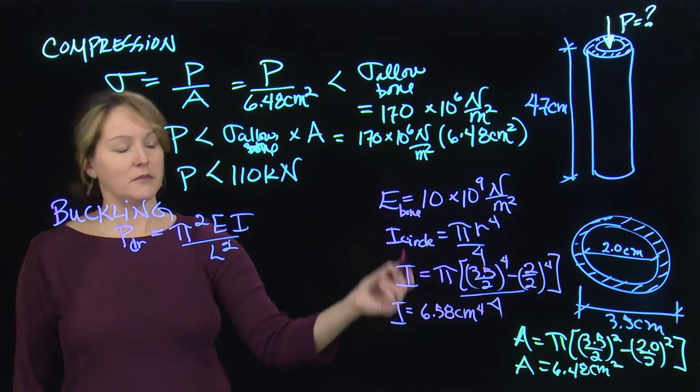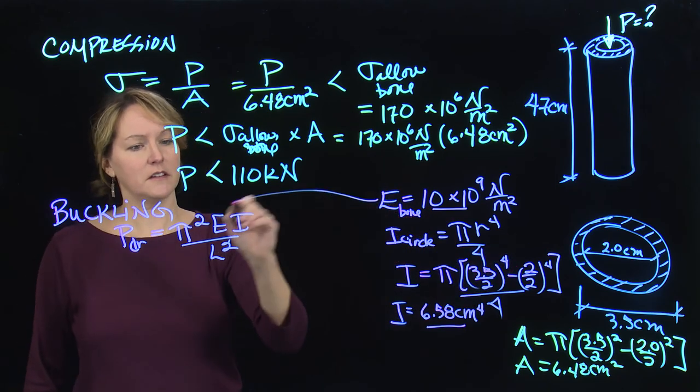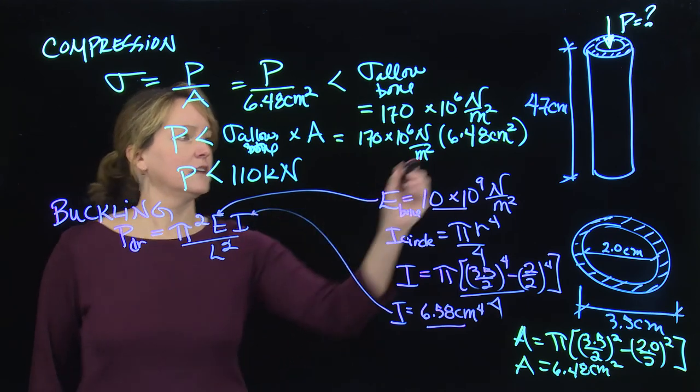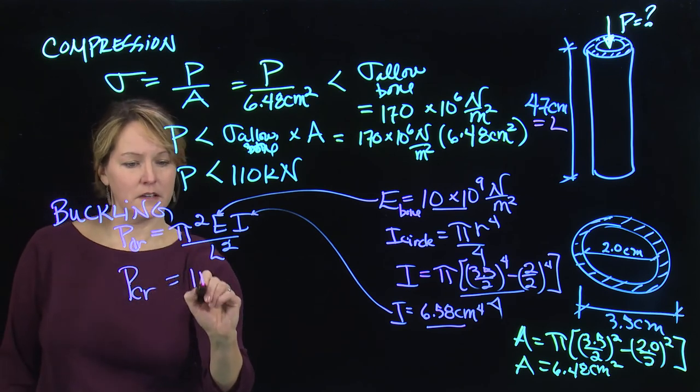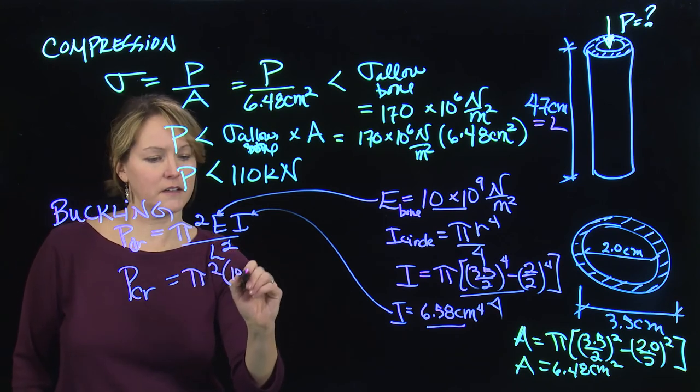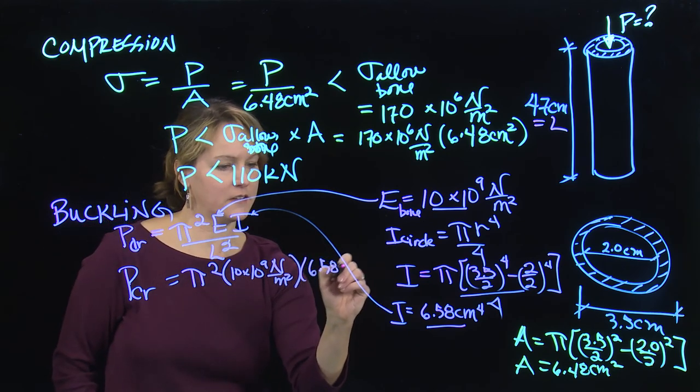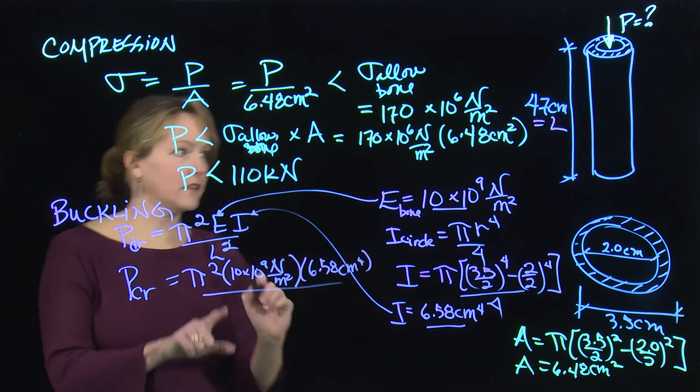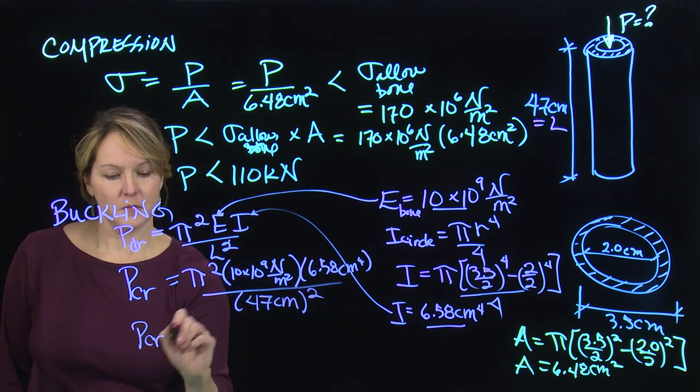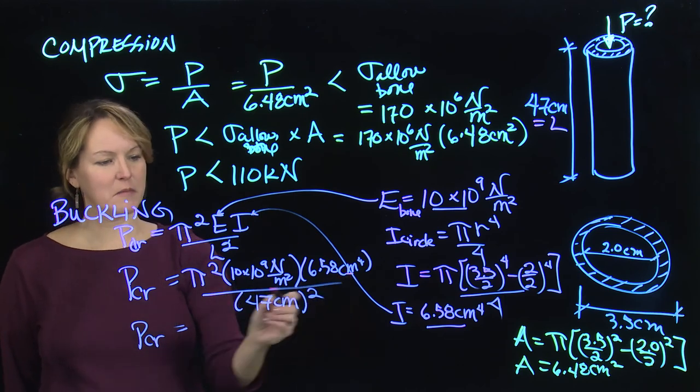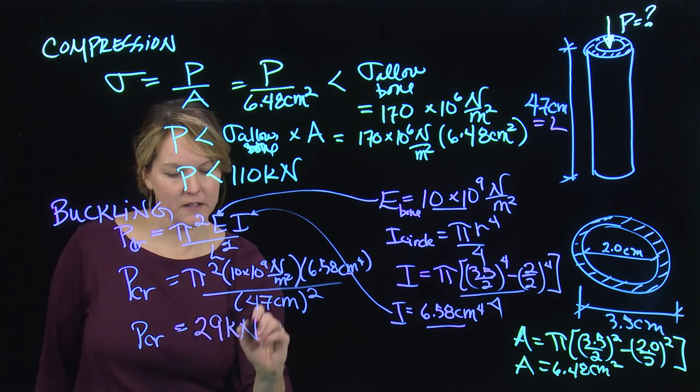That's just, again, a material property. It's not a material property. It's property of the cross section. And the E is a material property. But I can put those all together. The E goes in here, moment of inertia. And my L is this 47 centimeters. So I should be able to calculate my critical buckling load as pi squared times E, 10 times 10 to the 9th newtons per meter squared. Moment of inertia was 6.58 centimeters to the fourth. And I divide by the length, which is 47 centimeters. And that gets squared. Putting that in my calculator or somehow calculating that, I would want to pay attention to my units. And I'd have to change some units. But the handout will step you through that. I find that the critical buckling load is 29 kilonewtons.